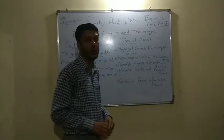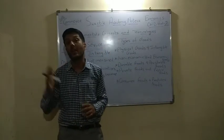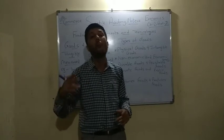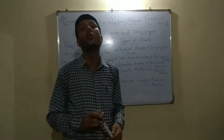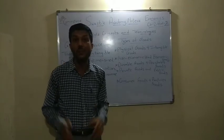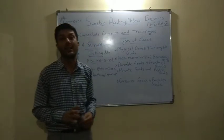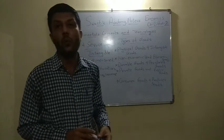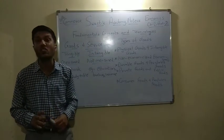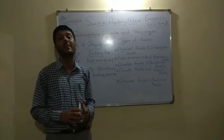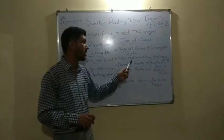Durable goods and perishable goods. Durable yani tikau — lambe samay ka tikta hai. Ek baar upyog karke usko baar baar use kar sakti ho — usse durable goods bola jata hai. Durable means tikau: upyog karne ke baad kabhi kharab nahi ho jata. Aisi bahut saari chizein hain jaise cupboard, TV, fridge, chair — ye sab chizein hain, jis se maintain karo ge, jis tariqe se upyog karo ge, us tariqe se hoti rahegi.